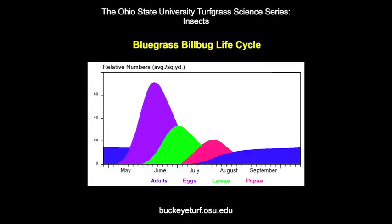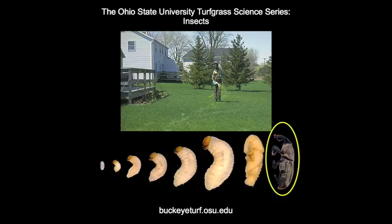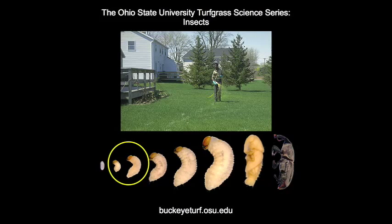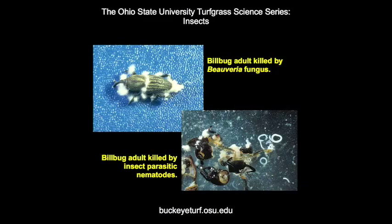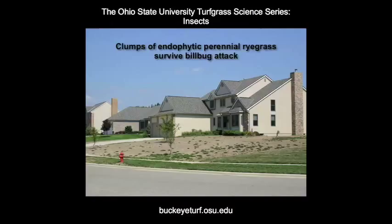Controls are often targeted against the overwintered adults in early spring before eggs are laid. Systemic insecticides can be used to knock out the smaller larvae as they burrow within grass stems. There are several diseases and insect parasitic nematodes that can effectively control billbug adults and larvae. One of the most effective controls for billbugs and stem weevils is to use resistant grasses. Endophytic perennial ryegrasses and fescues are very effective at eliminating billbug and stem weevil outbreaks.